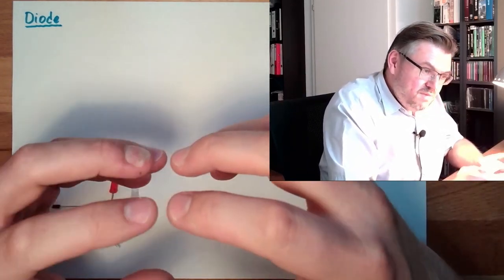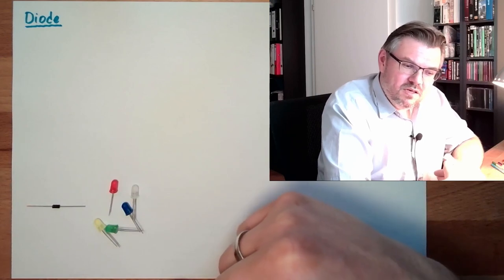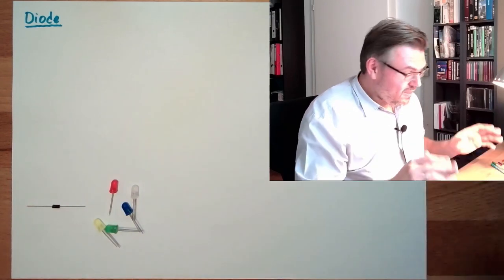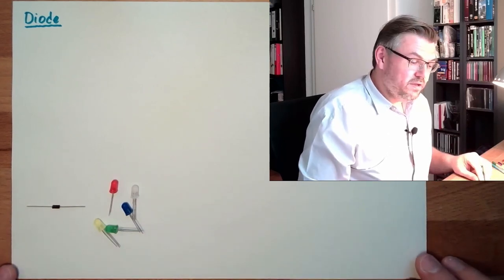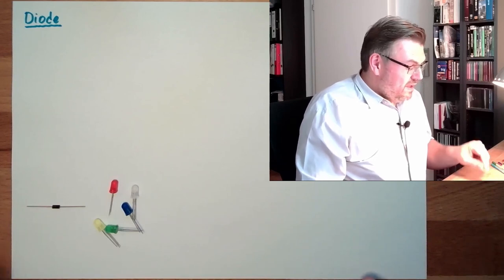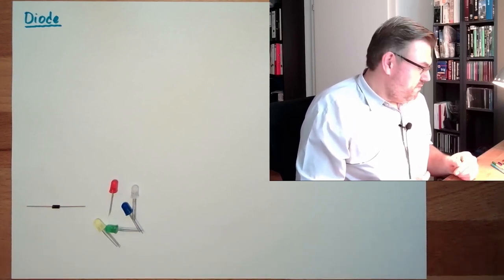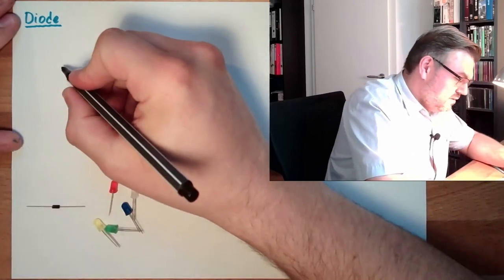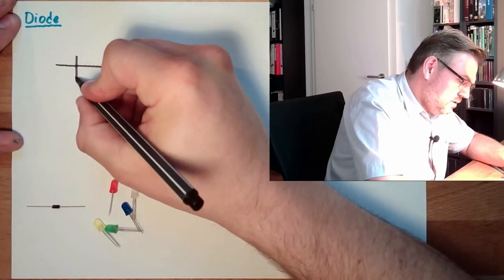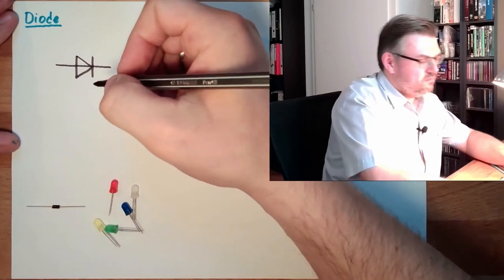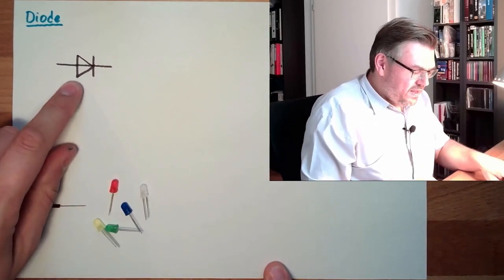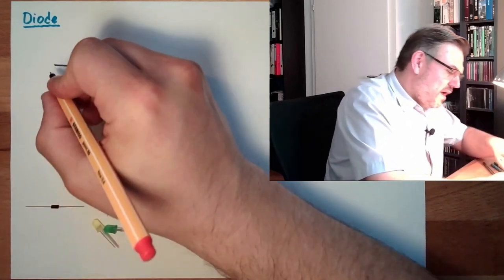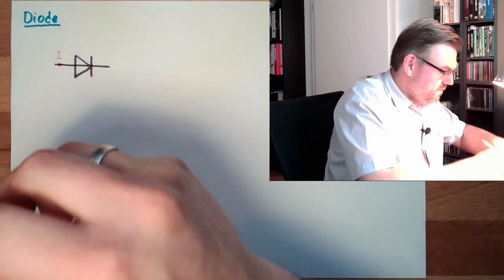And the diode is now a combination of two such semiconductor materials. One made dirty with a material which had one electron too much, and one made dirty with one electron too less, compared to the original material. And then you have a certain effect. A diode itself is acting as sort of a valve. The symbol of a diode looks like that. It has two connections. And then this is the symbol of the diode.